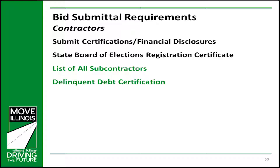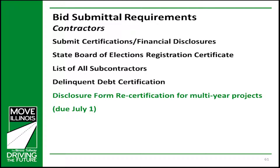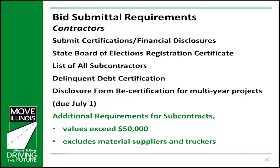The Procurement Code requires an annual recertification of the disclosure forms by the start of the State's fiscal year for all multi-year projects. Updated disclosures are due by July 1 annually. This requirement applies to both prime contractors and subcontractors — there are no exceptions. Additional procurement requirements apply to subcontractors whose contract value exceeds $50,000. This includes subcontractors of all types but excludes material suppliers and truckers. After award or execution of the contract, the prime contractor will be required to submit copies of agreements and disclosures for their subcontractors of all tiers whose contract value exceeds $50,000. The Tollway will not approve the subcontractor if disclosures are not submitted.